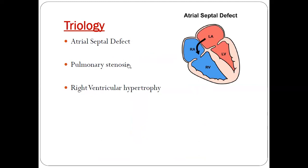What is triology of Fallot? Triology of Fallot includes three components, as the name suggests: atrial septal defect, pulmonary stenosis, and right ventricular hypertrophy.